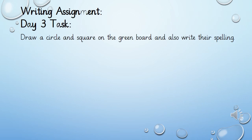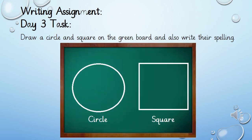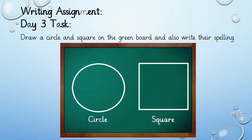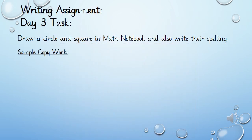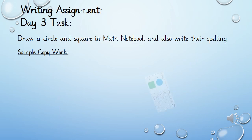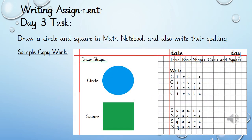For more practice of drawing circle and square, try to draw a circle and a square on your green board and also write the spelling. In your math notebook, draw a circle and a square, color them, and also write the spelling. A sample copy work is given for you.